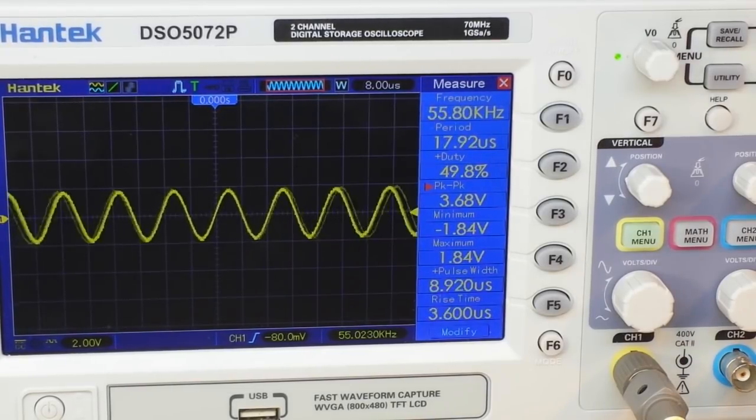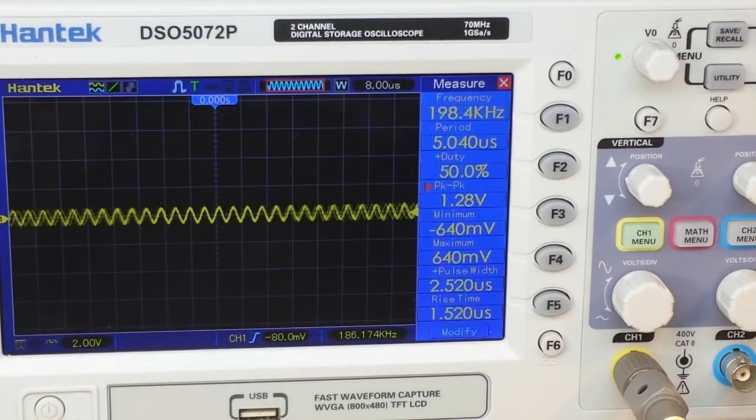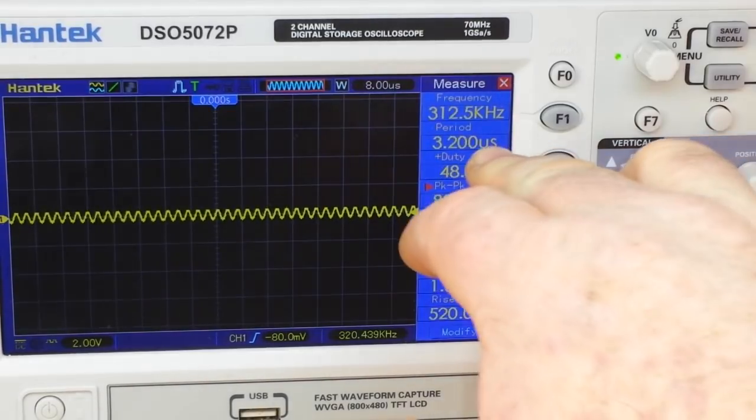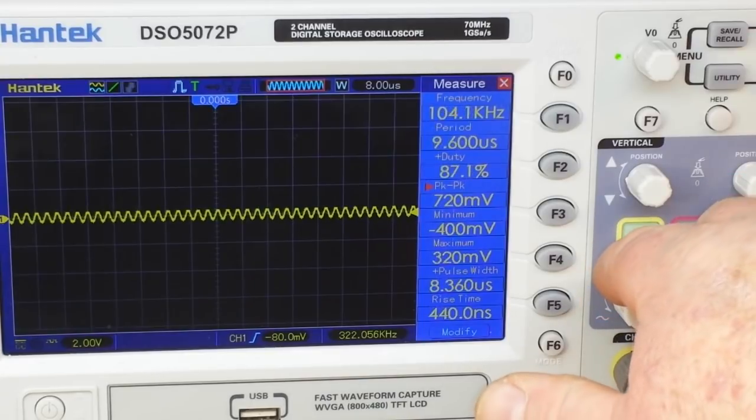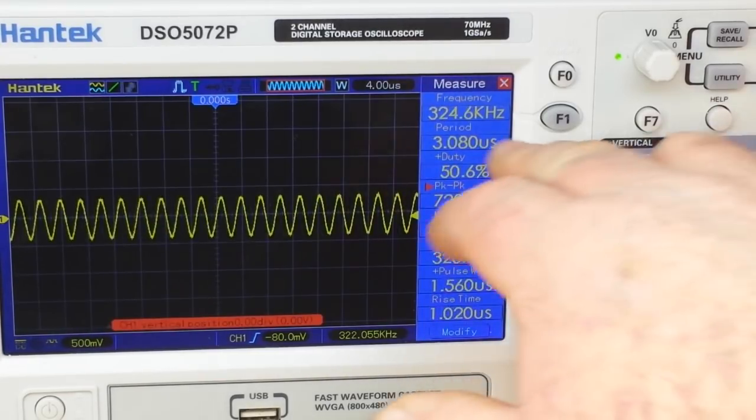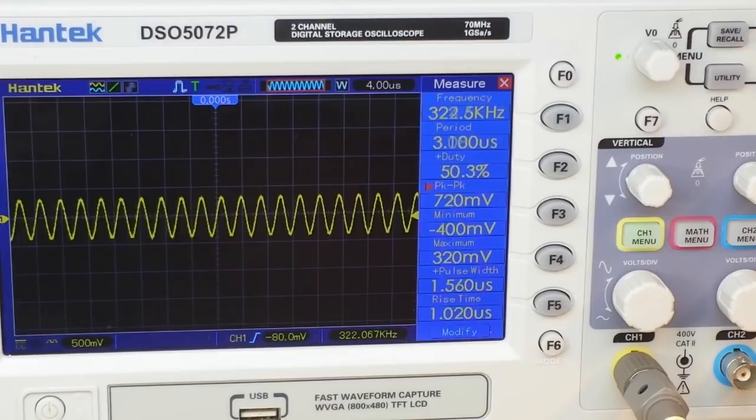And as our frequency increases, you can see that our amplitude decreases. So we're at 320 or so kilohertz, and our peak to peak is 740 millivolts.